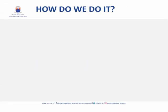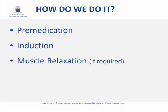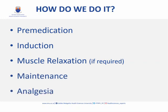Practically, the how-to of a general anesthetic can be divided into five sections: pre-medication, induction, muscle relaxation if required, maintenance of anesthesia, and analgesia. Let's look at each of these sections in more detail.